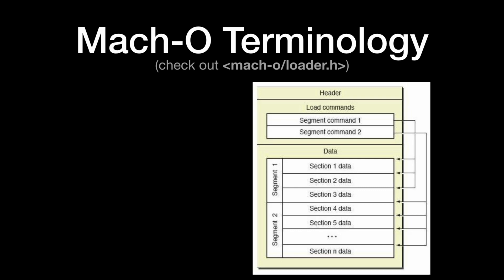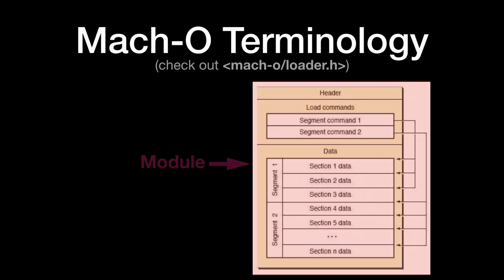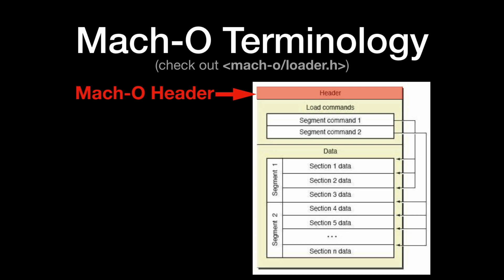Okay, the boring part — let's talk about terminology. I use the words 'module' and 'image' to mean anything loaded into the process, so UIKit is a module, your app's main executable is a module. Right at offset zero on disk there's a thing called the Mach-O header. Literally at the very start, this header tells you whether the module is compiled for 32-bit or 64-bit.